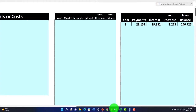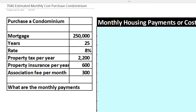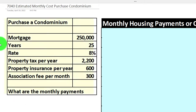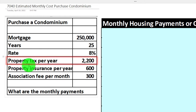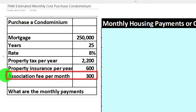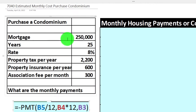We work these problems in Excel, and I'll try to make that point as we go through this practice problem in OneNote. On the left-hand side we've got the mortgage at $250,000, the term at 25 years, the rate at 8%, property tax per year at $2,200, property insurance per year at $600, and the association fee per month at $300. So what will the monthly payments be?